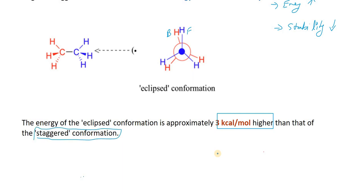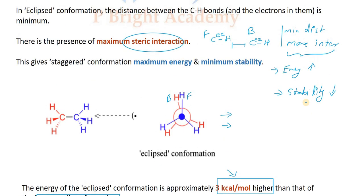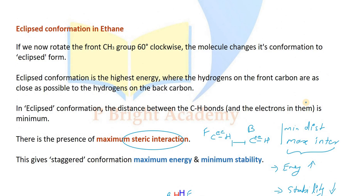In the eclipsed conformation, the interaction is maximum — bond-bond interaction and steric interaction are both maximized. This gives maximum energy and minimum stability. The energy difference between eclipsed and staggered conformations is 3 kilocalories per mole. This is an important concept worth 5 marks.